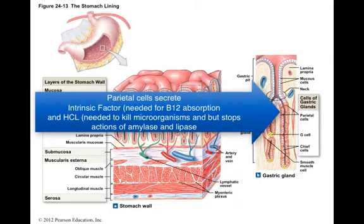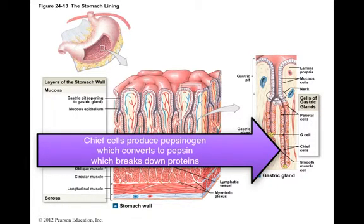The parietal cells secrete intrinsic factor, necessary for the intestines to absorb vitamin B12, and hydrochloric acid. HCl is so strong it would destroy the parietal cells, so instead the cells produce hydrogen and chloride ions which combine in the stomach to form HCl. This brings the stomach pH down to 1.5 to 2.0, which stops salivary amylase and lingual lipase from continuing digestion and kills most ingested organisms. Chief cells produce a proenzyme called pepsinogen; the acid converts it to pepsin, which breaks down proteins. Thus, chemical digestion of proteins begins in the stomach.